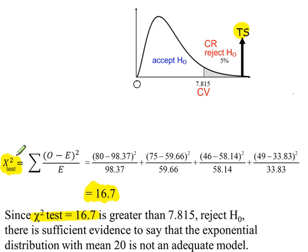Our test statistic: 16.7. It's greater than 7.815, we're going to reject H0. So in the conclusion, we've mentioned the exponential distribution with the assumed parameter that we were testing.